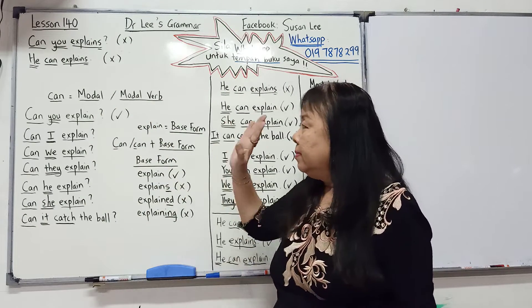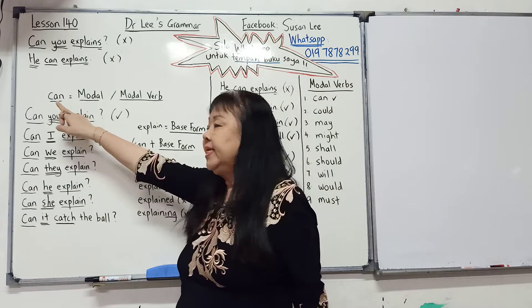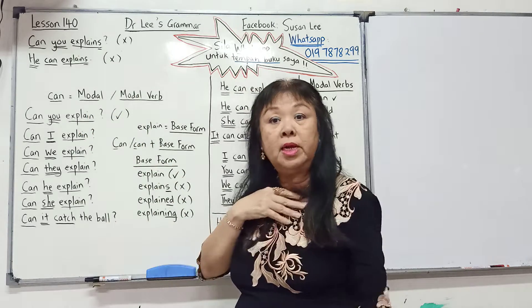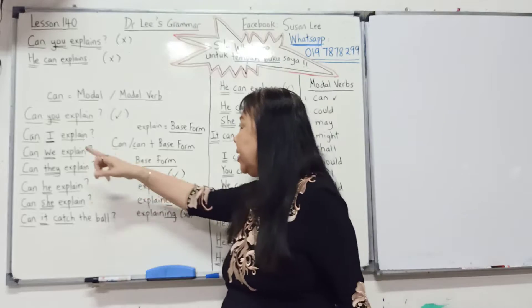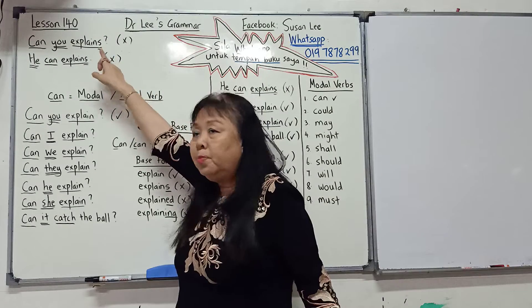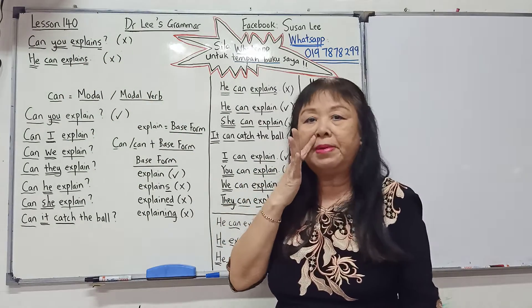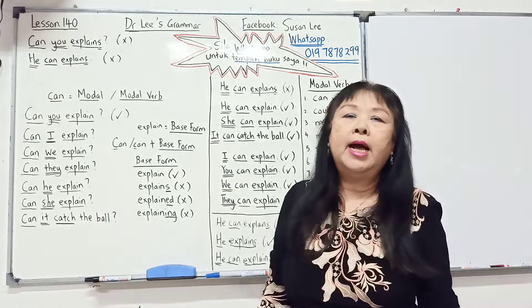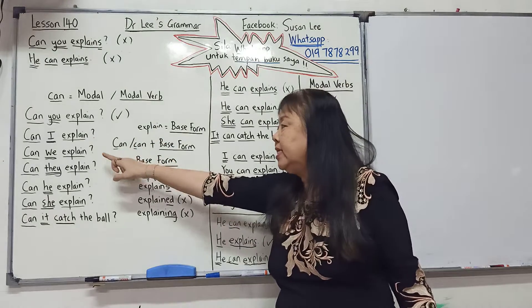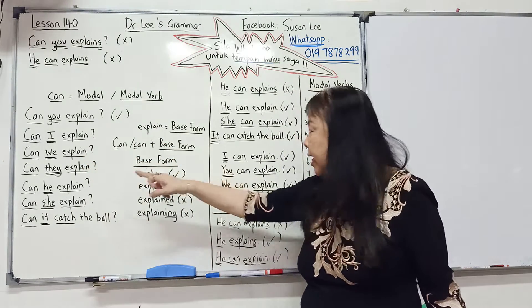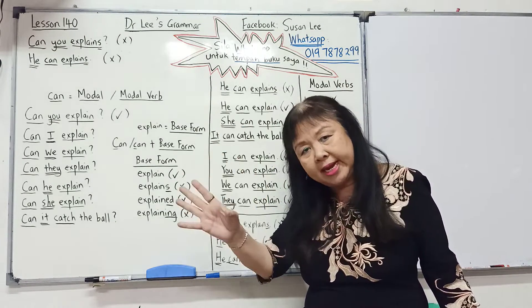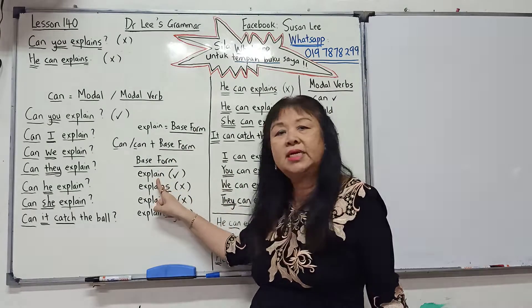Salah. Mula-mula kita tengok perkataan 'can'. Can dipanggil modal dalam grammar, ataupun modal verb — ya, sebenarnya kata kerja juga. Jadi 'can you explain?' — kalau kamu tulis begini, betul. Tetapi kalau 'can you explains?' — salah. Sebab apa? Mengikut peraturan tata bahasa, apabila kita gunakan 'can', tidak kira can huruf besar atau can huruf kecil, kata kerja atau perbuatan di belakang can mesti menggunakan kata asal.